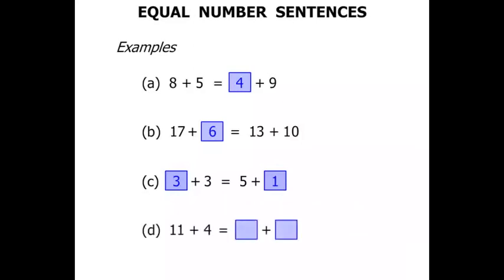This one here: 11 plus 4 equals something plus something. Well, 11 plus 4 certainly is 15. We've got 15 on that side, so we need 15 on the other side. So we simply need two numbers that add up to 15. Again, there's lots of different combinations. One of them would be 10 and 5.